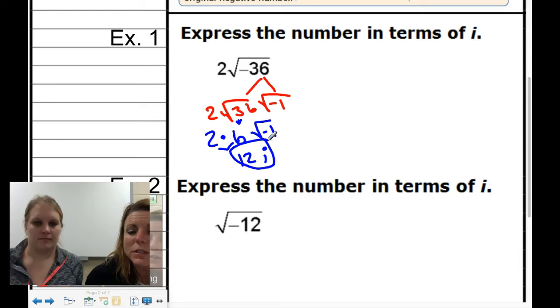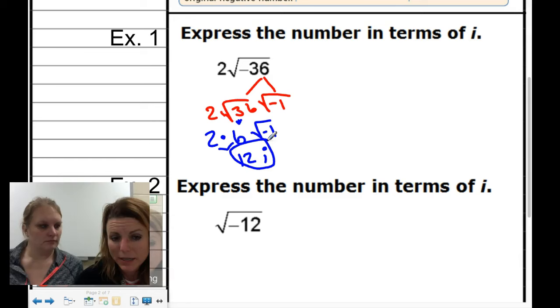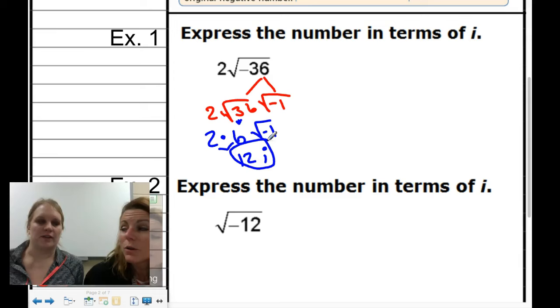Some students want to say, shouldn't it be plus or minus 6? No. The square root of 36 is just 6. The only time you're going to get a plus or minus is when you're taking the square root of x squared when you're solving an equation.